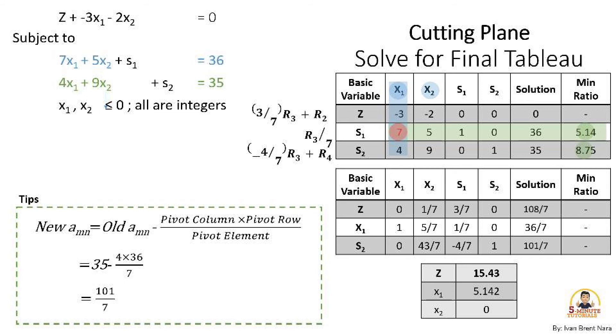After solving for the first iteration, based on optimality condition, there are no negative coefficients in the Z row. Hence, we can now say that this is our final tableau.